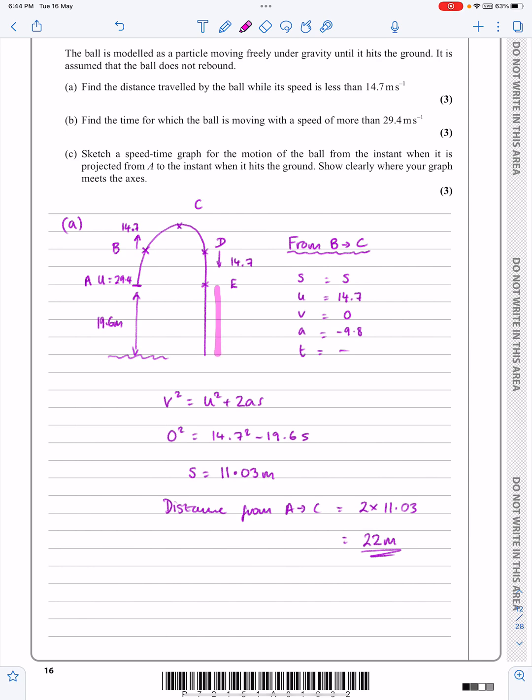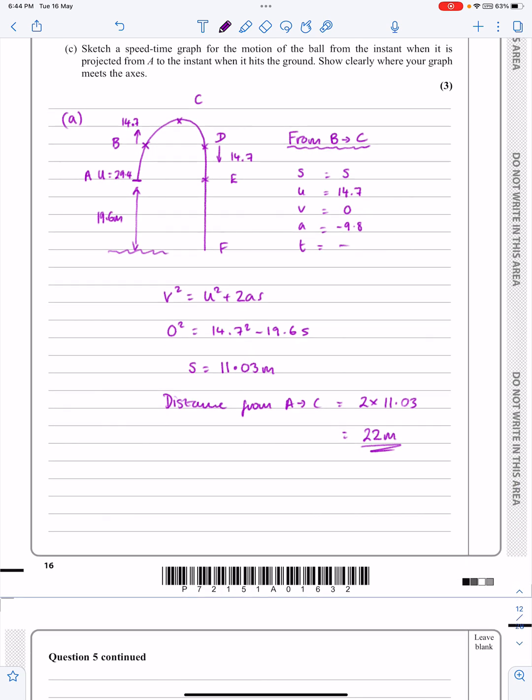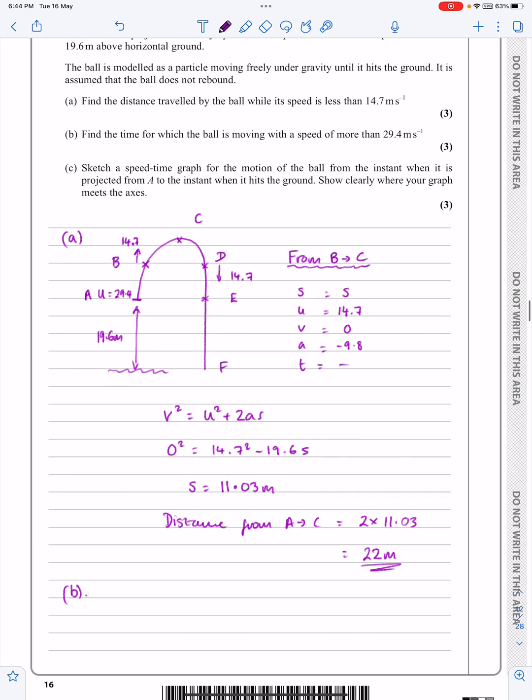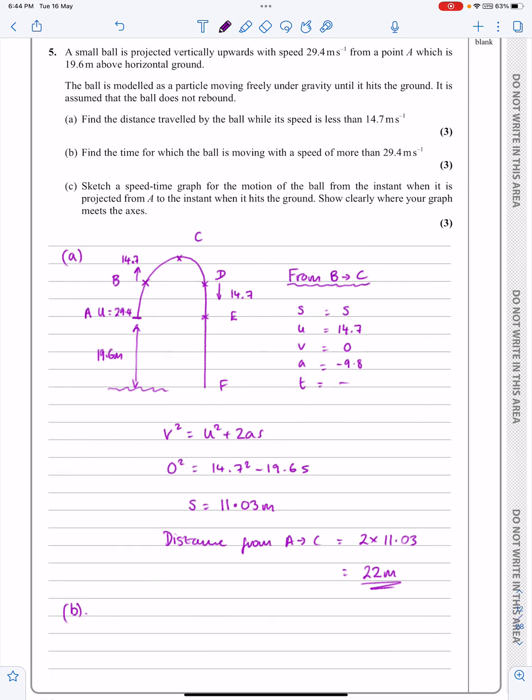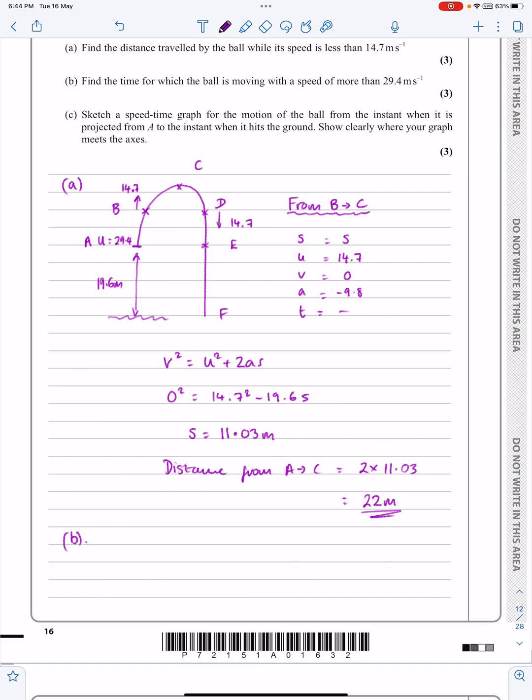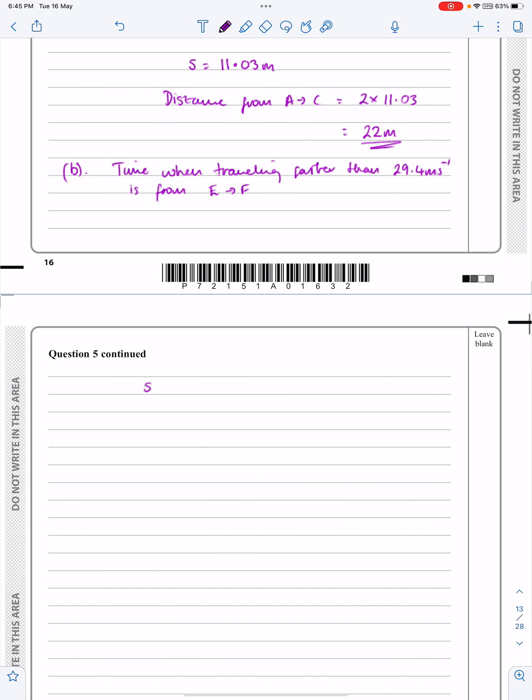So that means that the part of the journey they're interested in now is E there, I'm going to call it E down to F. Don't know that I necessarily need to put all these letters in, but I'm just trying to make it clear to you. If I make it clear to you, then it's clear to the examiner as well, so hopefully that is the case. So for part B, if I want to find the time for which it's moving more than 29.4, I want the time from E to F. So I might just say that to the examiner, time when travelling faster than 29.4 is from E to F.